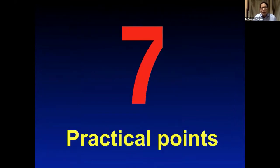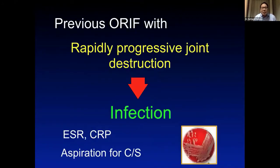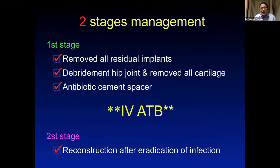I'm going to give seven practical points when caring for post-traumatic patients. First, you must rule out infection. Patients with previous surgery carry a risk of occult infection. Check ESR and CRP, and sometimes aspirate for culture. If there is evidence of infection, perform a two-stage hip replacement: first stage removes all residual implants, debrides tissues, places an antibiotic spacer, and sends specimens for culture. Once infection is eradicated, proceed to second-stage reconstruction.